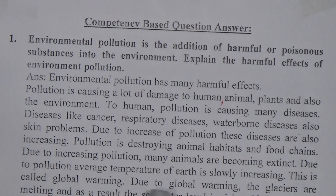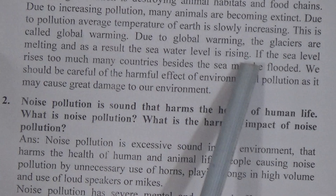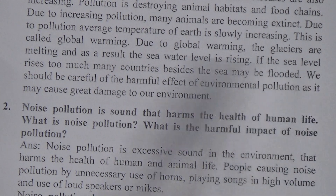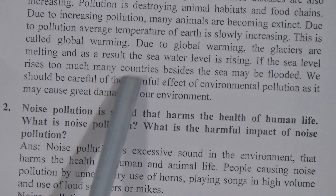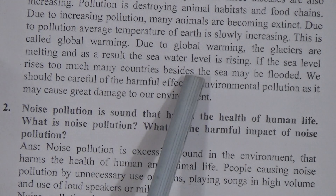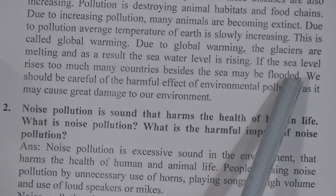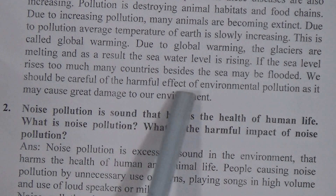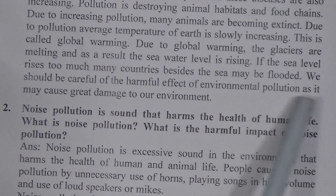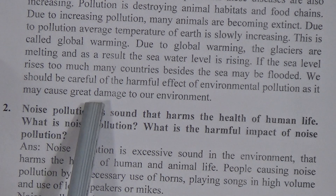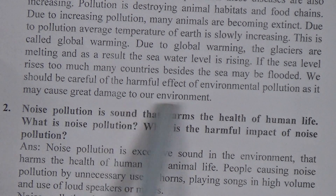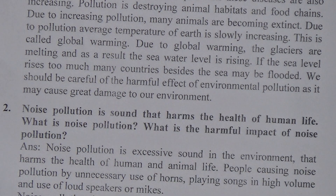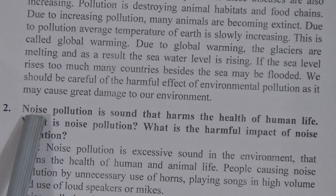Due to pollution, the average temperature of the Earth is slowly increasing — this is called global warming. Due to global warming, glaciers are melting, and as a result the sea water level is rising. If the sea level rises too much, many countries beside the sea may be flooded. We should be careful of the harmful effects of environmental pollution as it may cause great damage to our environment.